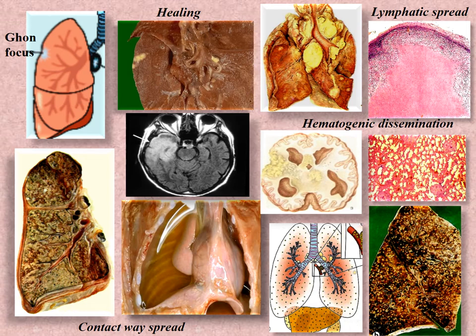Hematogenic dissemination: invasion of blood vessels leads to dissemination via the bloodstream, giving rise to tuberculous foci simultaneously in many organs. These foci may be of tiny size — miliary tuberculosis develops. If the tuberculous foci are larger than 1 cm, large focal tuberculosis occurs. The process may have a general character or can affect individual organs, such as tuberculous meningitis or pulmonary miliary tuberculosis. This is commonly due to tuberculous meningitis.